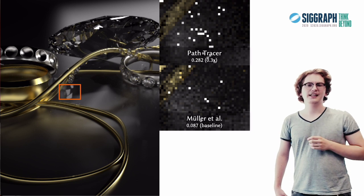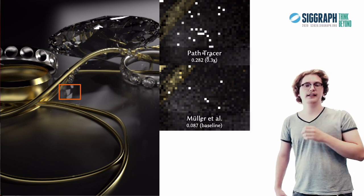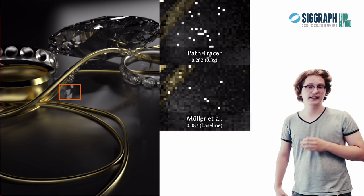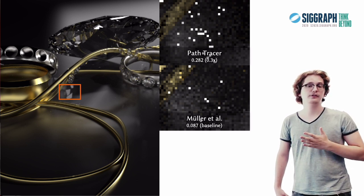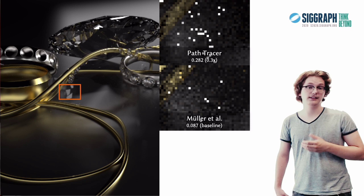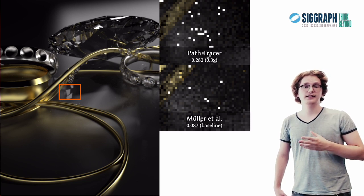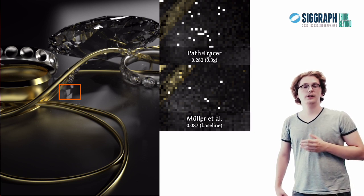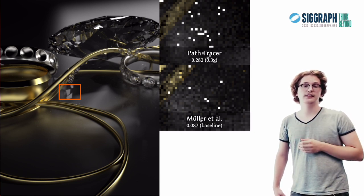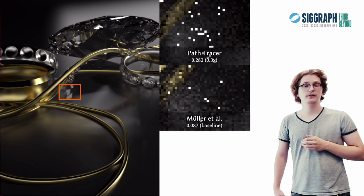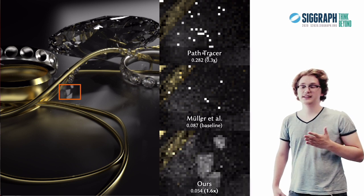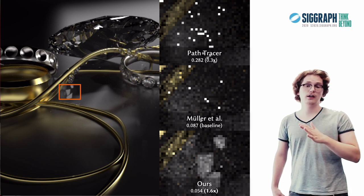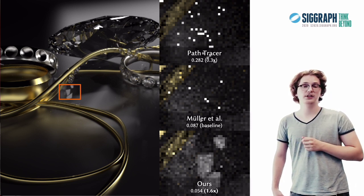Now, the problem here is amplified, because there are several internal reflections until this caustic is actually produced. And each of these internal reflections is a random decision that is typically unguided, meaning that it causes severe levels of noise. But with second moment guiding, we are actually noticing that there is noise here and focusing our sampling primarily on the diamond, which helps us significantly speed up the convergence of this caustic and also speed up the convergence of the entire image as a whole.